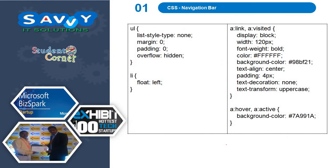For the ul unordered list, list-style-type is none, margin is 0, padding is 0, and overflow is hidden. Overflow hidden means the items come in side by side. The li float is set to left, meaning the menu is left-aligned, though somebody may give center.